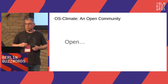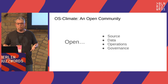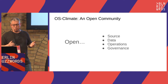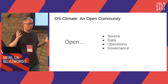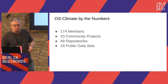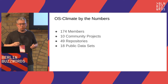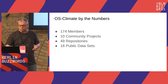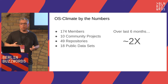OS Climate is being built out as an open community. What do I really mean by open? Of course, we're building open source. We're trying to produce open data products and community assets. But also, we're trying to do all of our software deployments and operations in the open, and also use open governance principles wherever we can. There are currently approaching 200 members, 10 community projects, almost 50 repos, and pushing 20 publicly available datasets right now. If you stand back and squint, that's kind of about doubling over the last six months, so the community is growing quite rapidly.